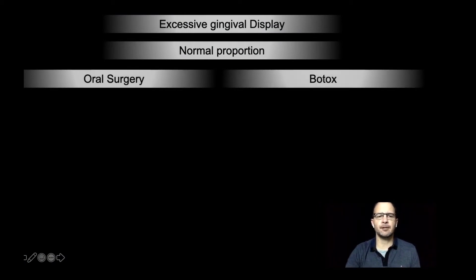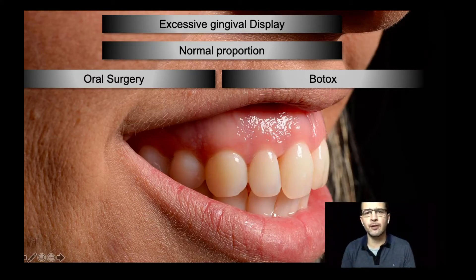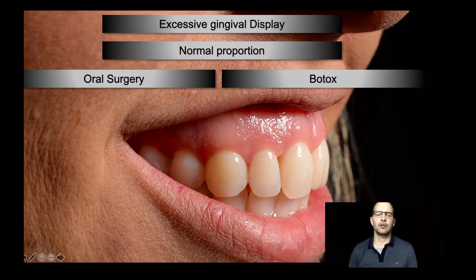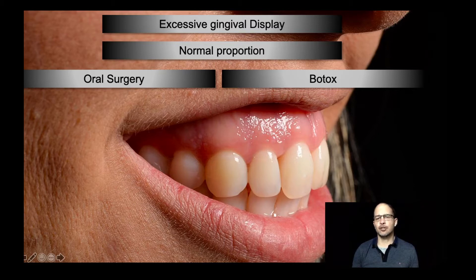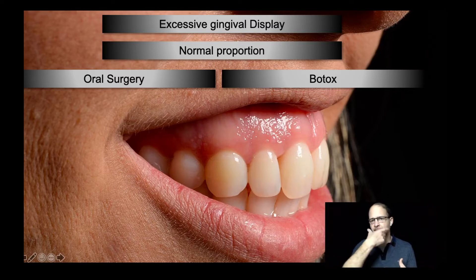I'm going to start my presentation already showing the excessive digital display, which is the starting point of a static pro-anthane. If the patient has a normal proportion, we're going to go to the two proportional gauge. This patient, like this photo, probably needs an oral surgery. The maxilla probably has to receive a lift, or also in the mandible, to place the maxilla at its final position.